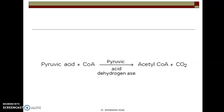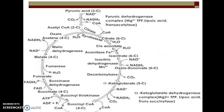This is the overall reaction that takes place in the Krebs cycle: pyruvic acid along with coenzyme A gets converted into acetyl-CoA and CO2. This is the whole cycle.